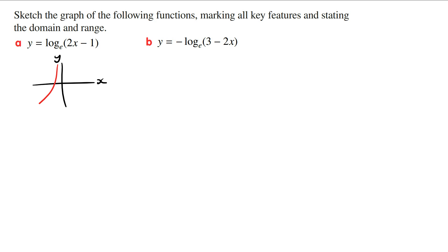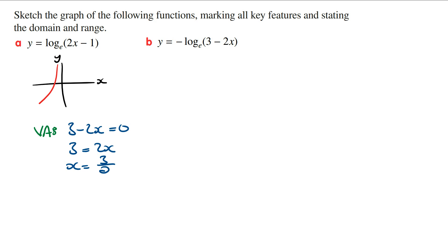To find the vertical asymptote, we let 3 minus 2x equal 0 and solve for x. So 3 equals 2x, and solving for x gives x equals three halves.